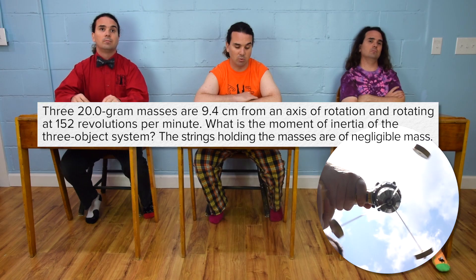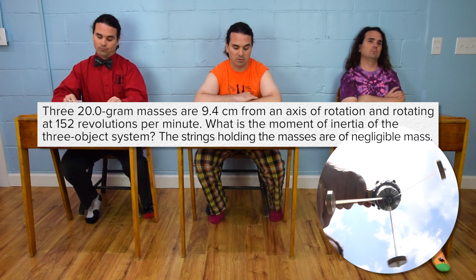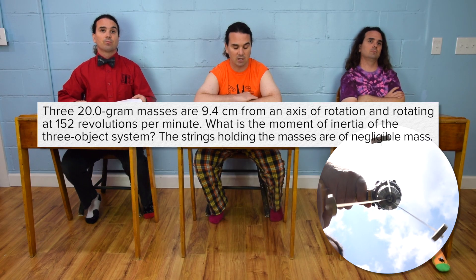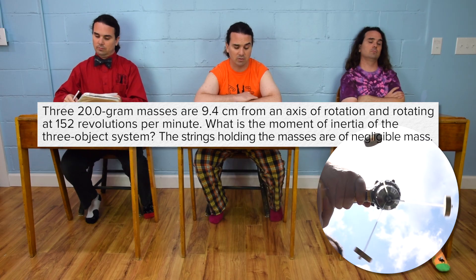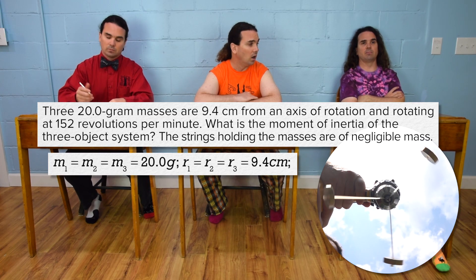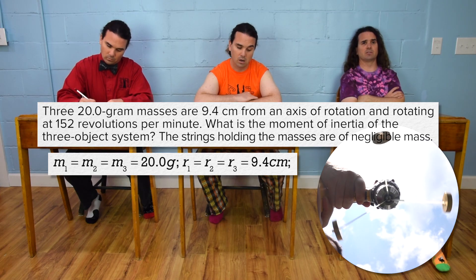Three 20.0 gram masses are 9.4 centimeters from an axis of rotation and rotating at 152 revolutions per minute. Mass 1, mass 2, and mass 3 each equal 20.0 grams.